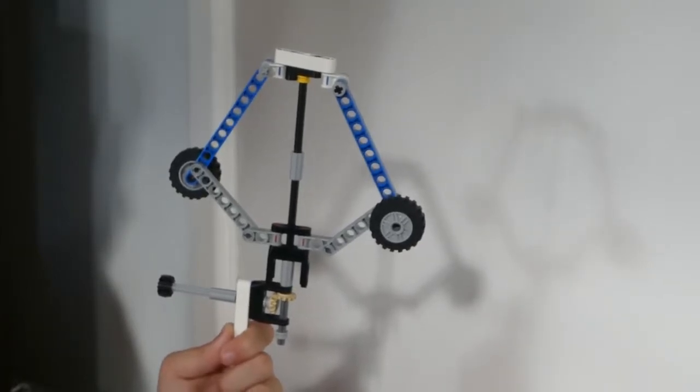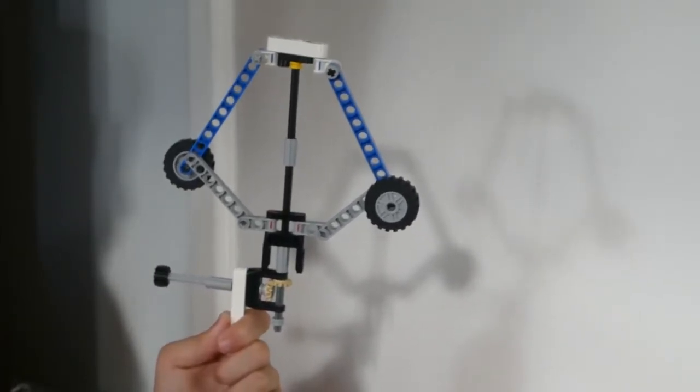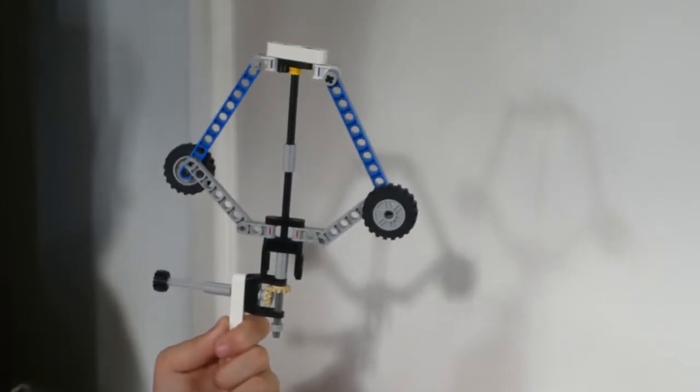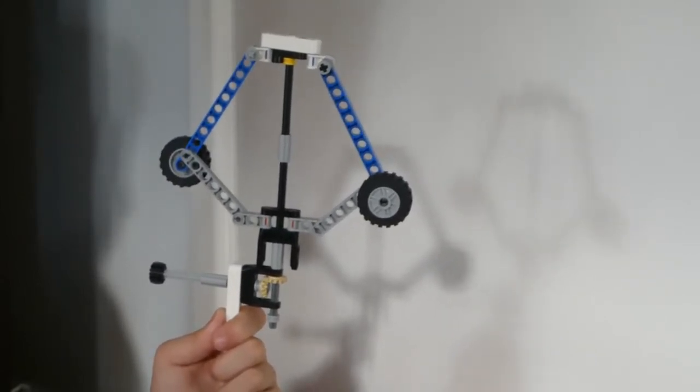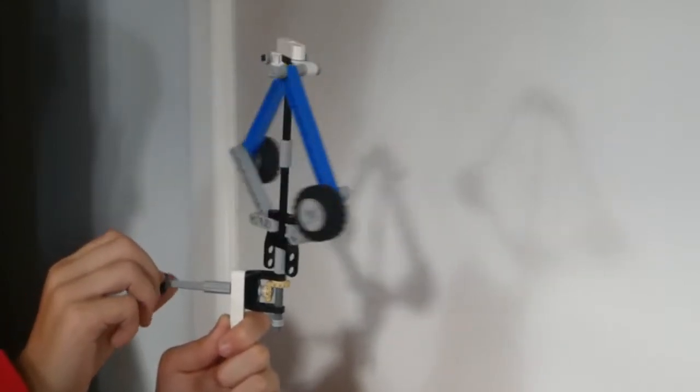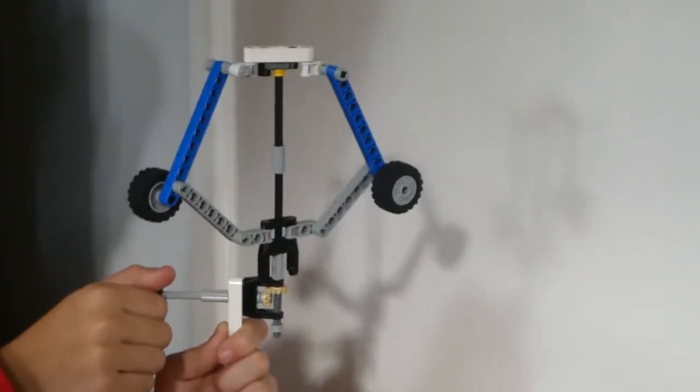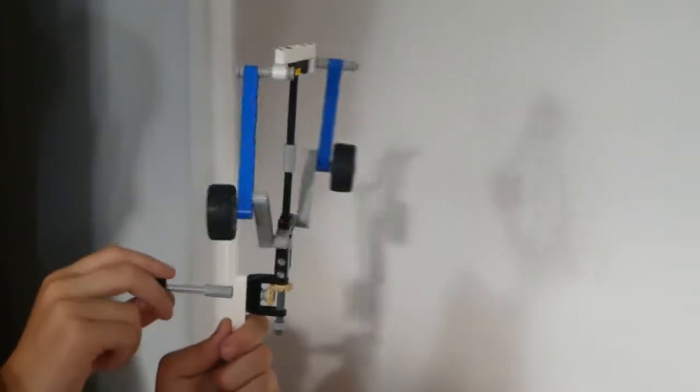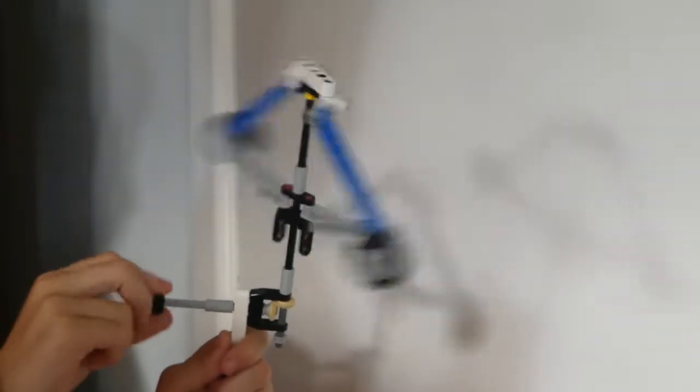This is our Lego replica of a James Watt steam engine governor. Oscar, if you could just spin it slowly, you can see it turns around like that. But as it goes a bit faster, the weights on the end of the arms spin outwards. Faster, faster, faster! And then the little bit in the middle goes up.